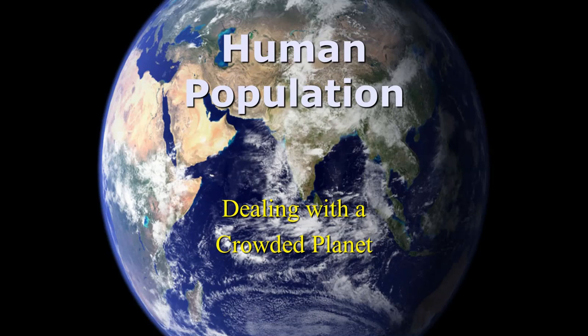Today's topic is human populations. At the beginning of this class we talked about how the number one environmental problem is overpopulation. This very fast growth of humans is responsible for all of our issues — from climate change to water and air pollution, to loss of biodiversity, and everything we're seeing today.